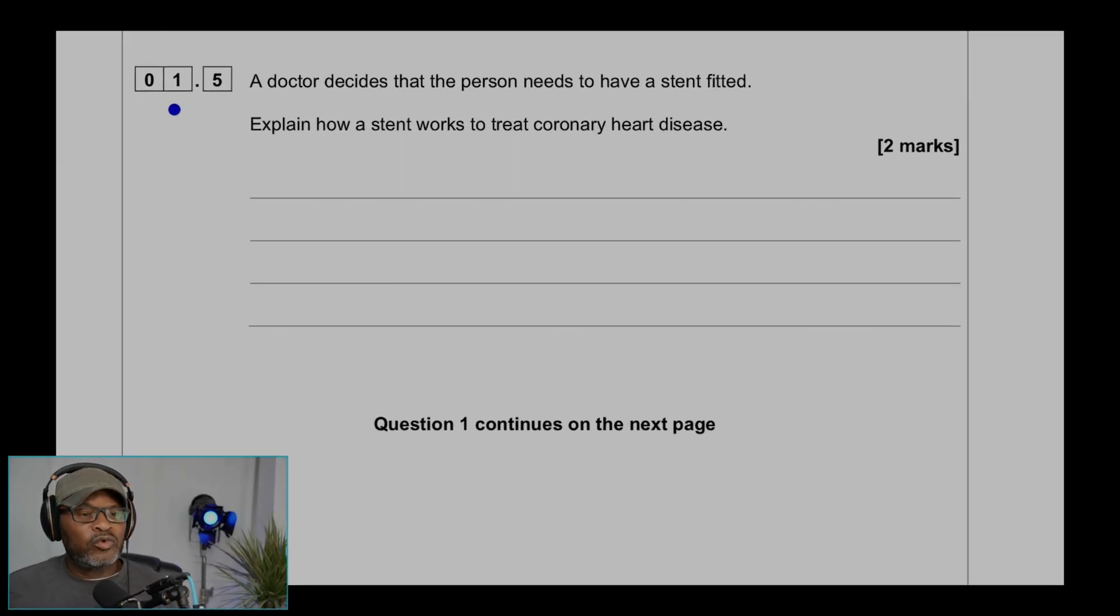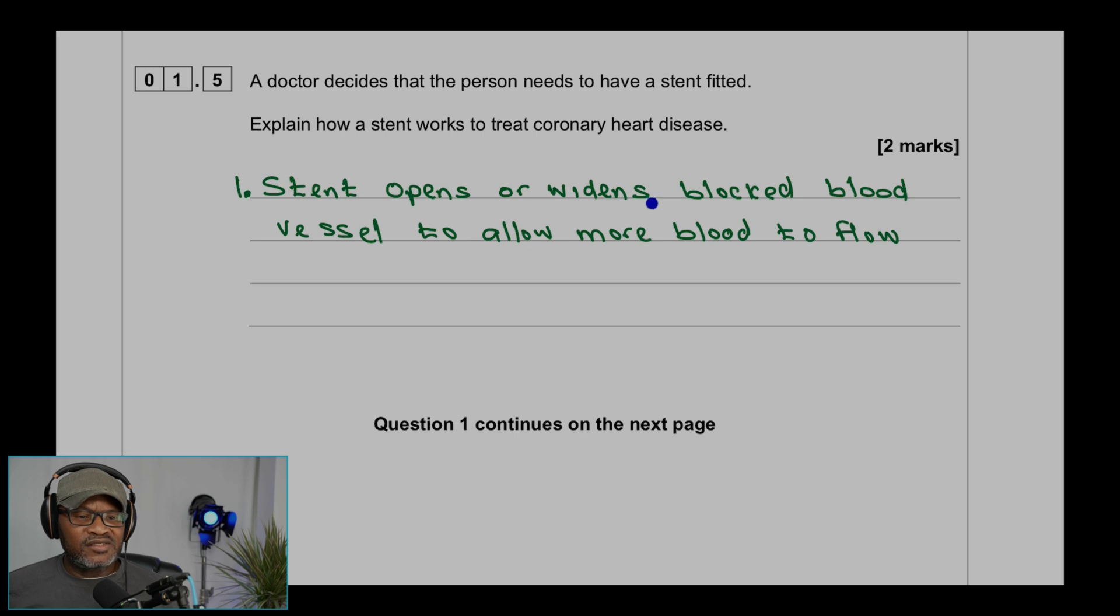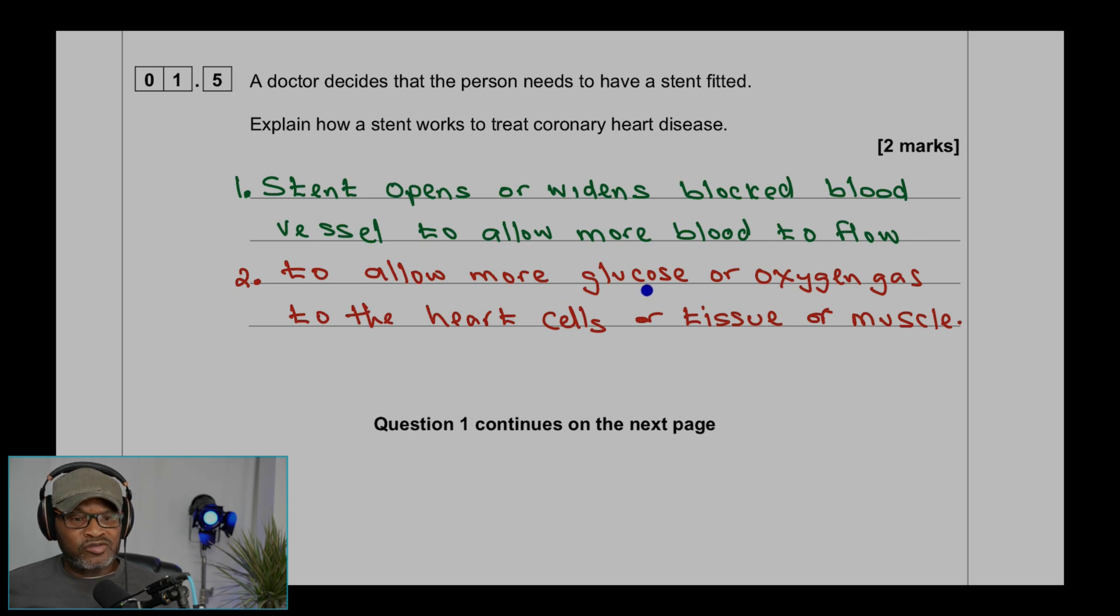Question 1.5: A doctor decides that the person needs to have a stent fitted. Explain how a stent works to treat coronary heart disease. Two marks: One, stent opens or widens blocked blood vessels to allow more blood to flow. To allow more glucose or oxygen gas to the heart's cells or tissue. Almost as two marks.